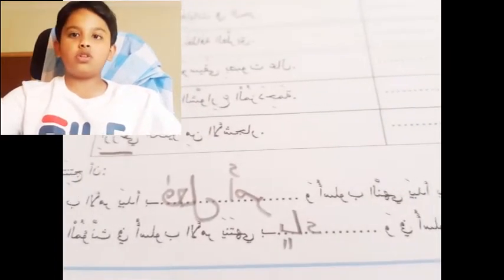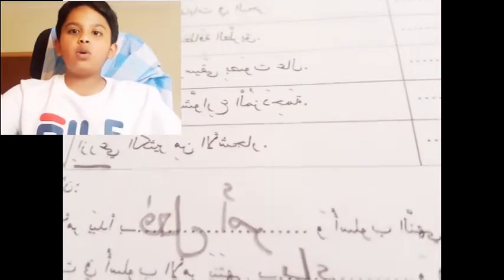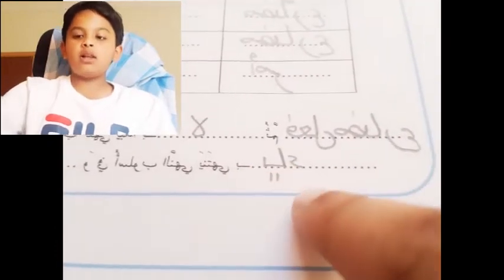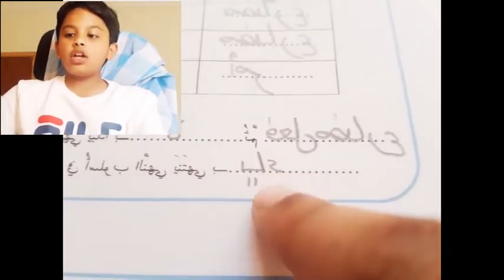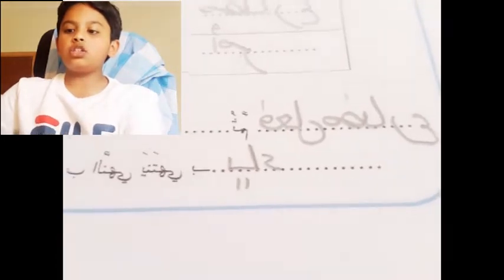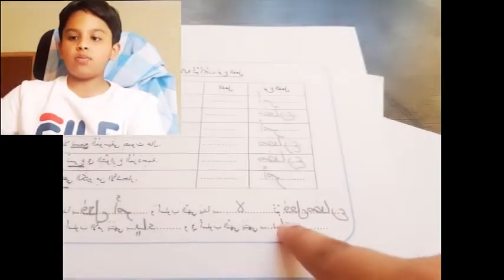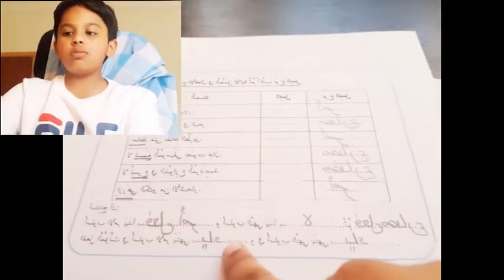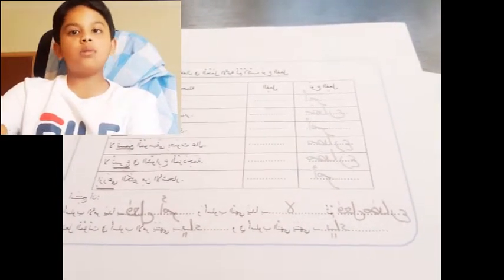Al Faal Muannas fi Usloob al Amr, that means if there is any female verb in Usloob al Amr, it should start with Alif. And then if it is Muannas, if it is female in negative form, it should end with Ya also. So for both of them, if it is Faal Muannas for Usloob al Amr and Usloob al Nahi, both of them should end with Ya.